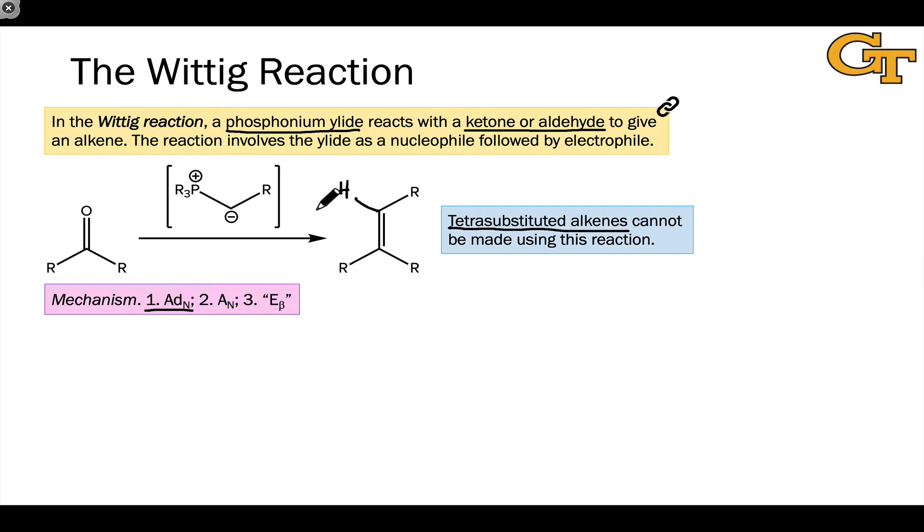The mechanism starts with the nucleophilic reactivity of the ylide carbon. This carbon adds to the electrophilic carbonyl carbon in a classic AD sub n elementary step. And in fact, this electron flow is highly analogous to the first step after proton transfer of the Corey-Czajkowski epoxidation that we saw in the last video. In the resulting intermediate, we now have an anionic oxygen atom and a positively charged phosphorus atom.